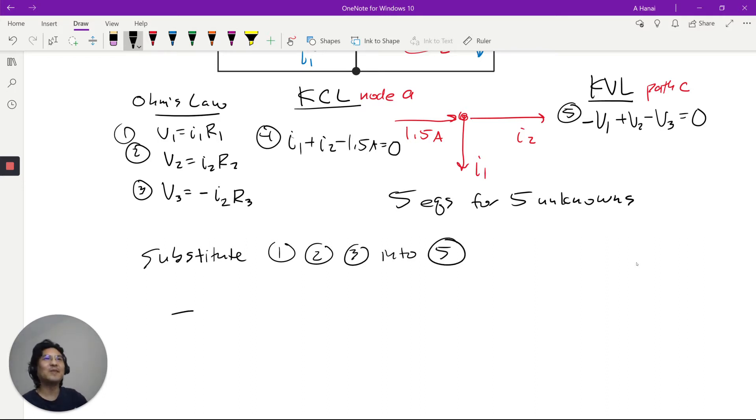So minus V1, V1 is I1*R1, plus V2, which is I2*R2, minus V3, which is negative I2*R3. Let's simplify this a little bit. So we got I1, I2, I2, we can factor.